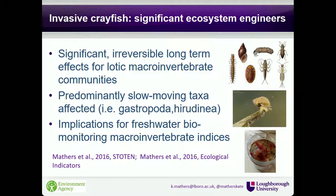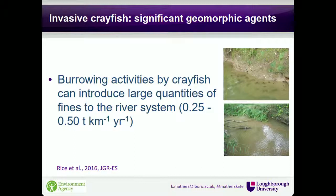Previous work from my PhD demonstrated that where invasive crayfish invade in low-disturbance ecosystems, they have significant and long-standing effects for macroinvertebrate communities, persisting for over 10 years after the invasion date. It was predominantly slow-moving taxa — leeches and snails — that were affected, as they are easy prey for crayfish. This had significant implications for commonly employed freshwater biomonitoring indices, including abundance-weighted techniques such as LIFE for flow evaluation and PSI for sediment.